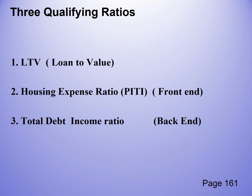The three qualifying ratios are: loan-to-value, the housing expense ratio (which is the front end), and the total debt-to-income ratio (back end). The most important of these right now is the housing expense ratio. We want to know for our final exam what that is — it's called the front end ratio, or housing expense ratio.